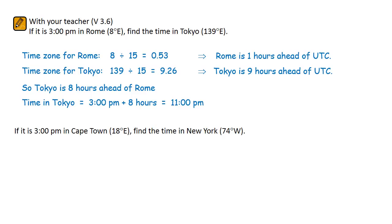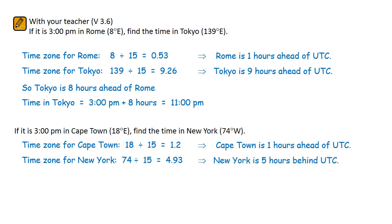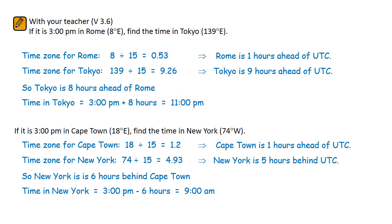The next example is similar. Find Cape Town's time zone: 18 divided by 15 equals 1.2, round to the nearest, that's 1 hour ahead of UTC because Cape Town's longitude is to the east. Find the New York time zone: 74 divided by 15 equals 4.93, round to the nearest, that's 5 hours behind UTC because its longitude is to the west. So all in all, New York is 6 hours behind Cape Town. The time in New York will be 3pm minus 6 hours — that will be 9am.